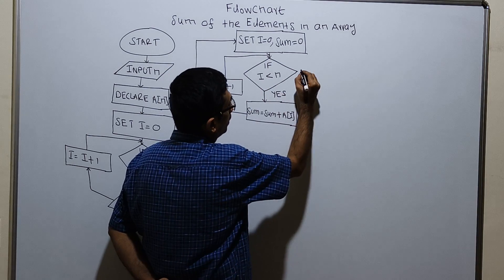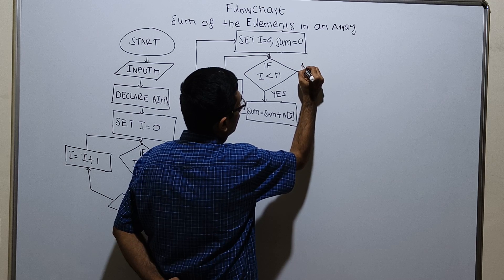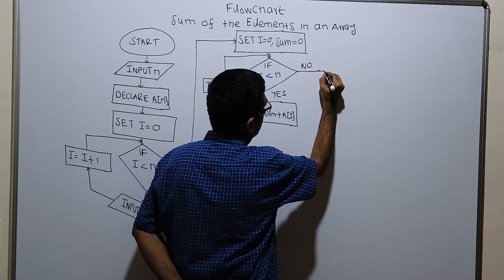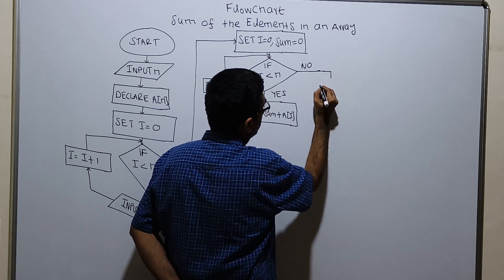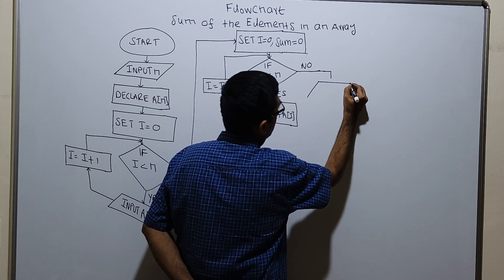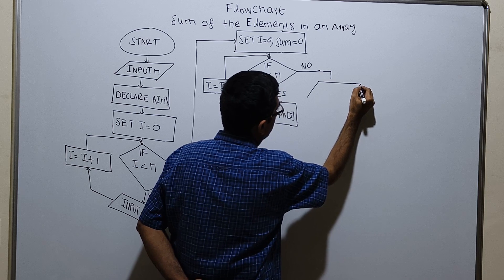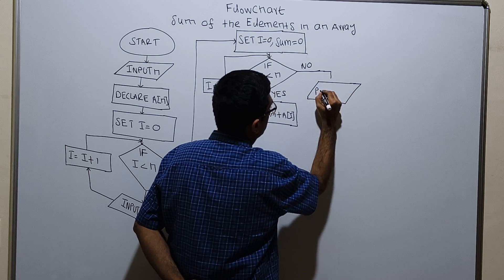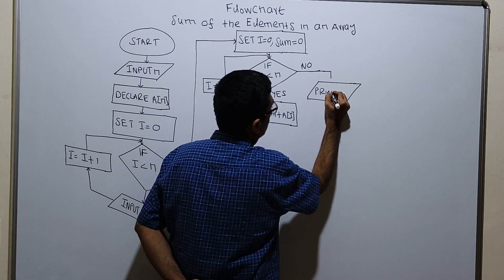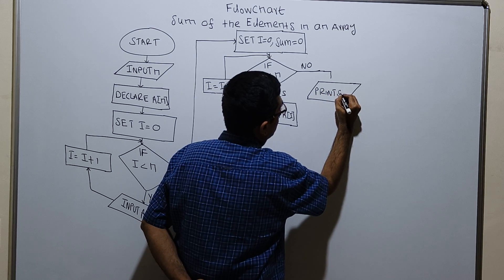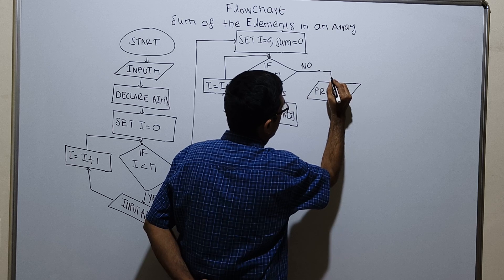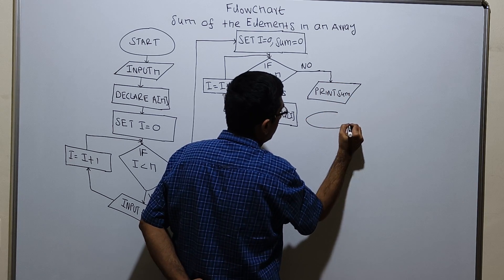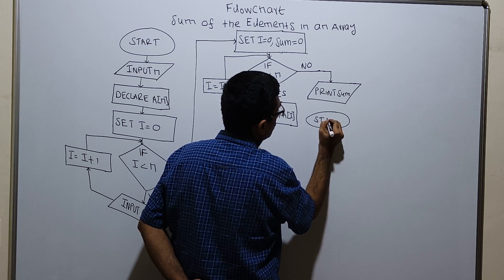If i less than n is false, in such a case I am printing the value of the variable sum. Print sum, and this is the logical end of the flowchart.